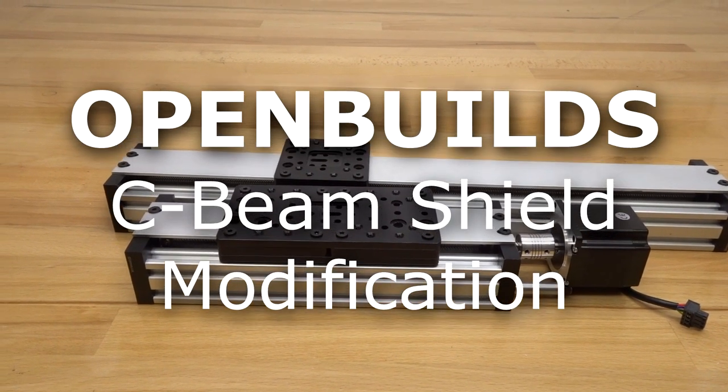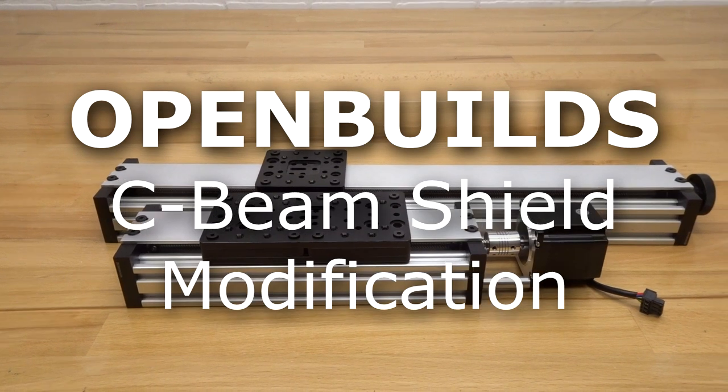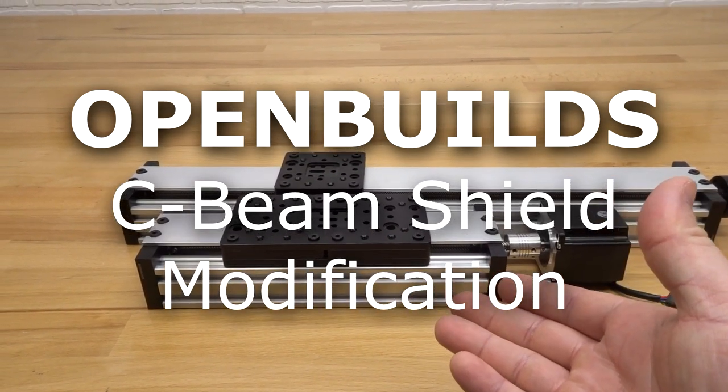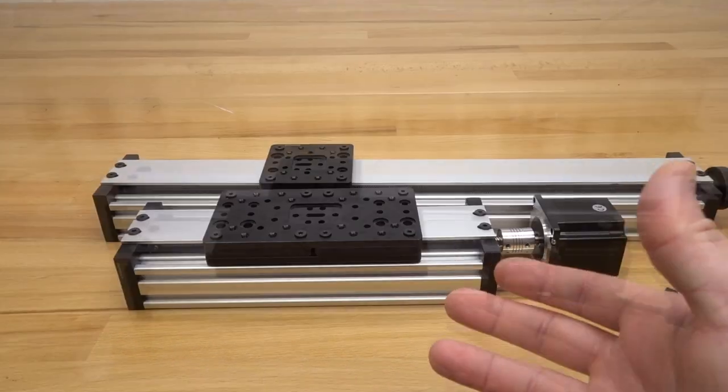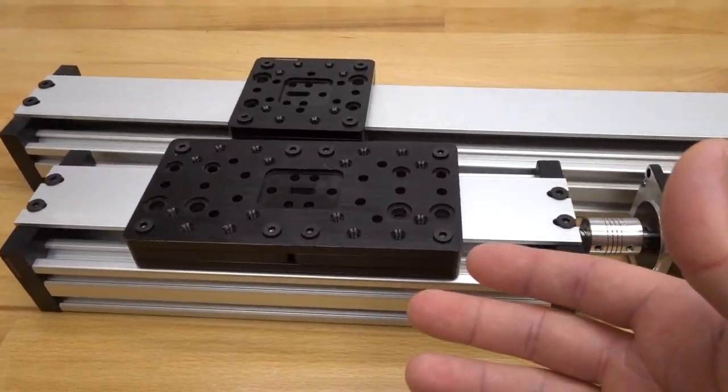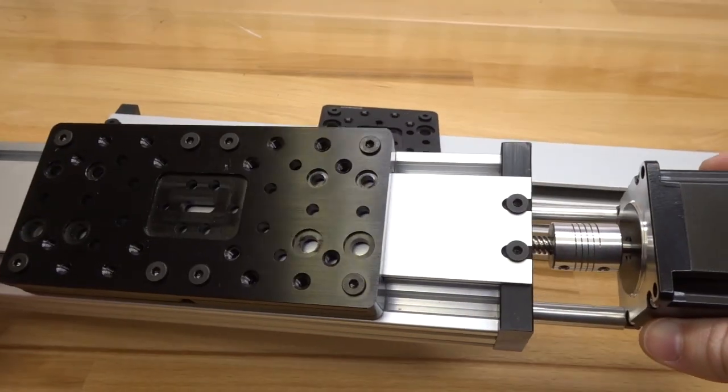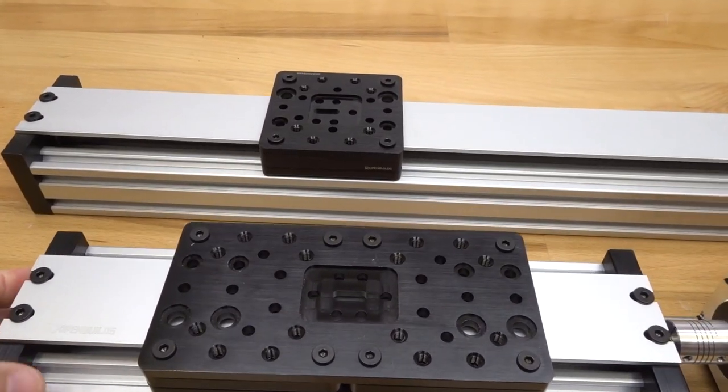Hi everyone and welcome back to another one of our instructional build videos. On today's build video we're going to show you how to assemble your C-beam shield to your double wide gantry actuator. As you can see here, this is a really nice modification. The C-beam shield is really easy to install as well.